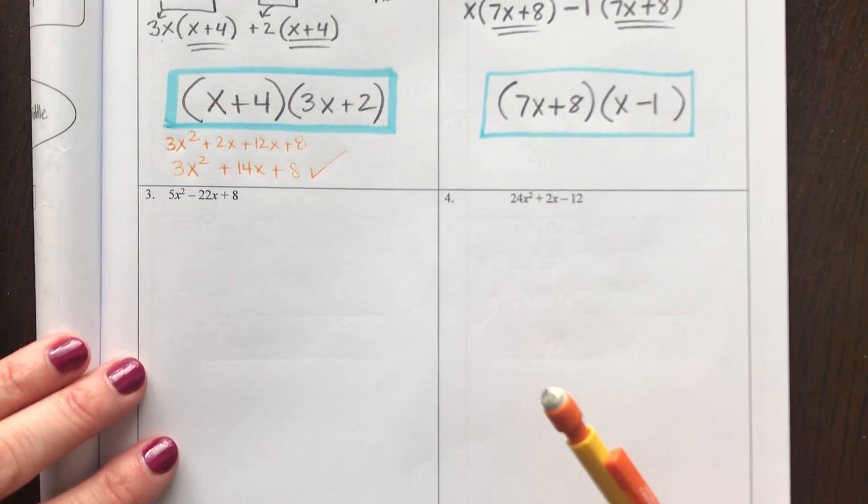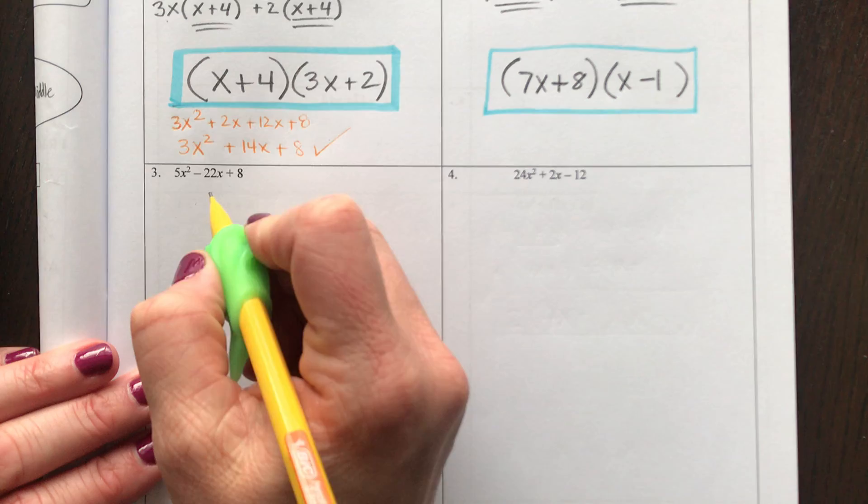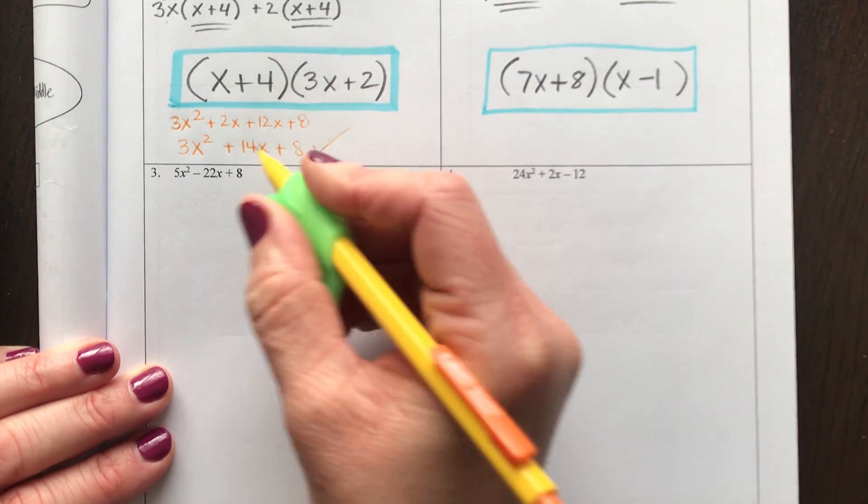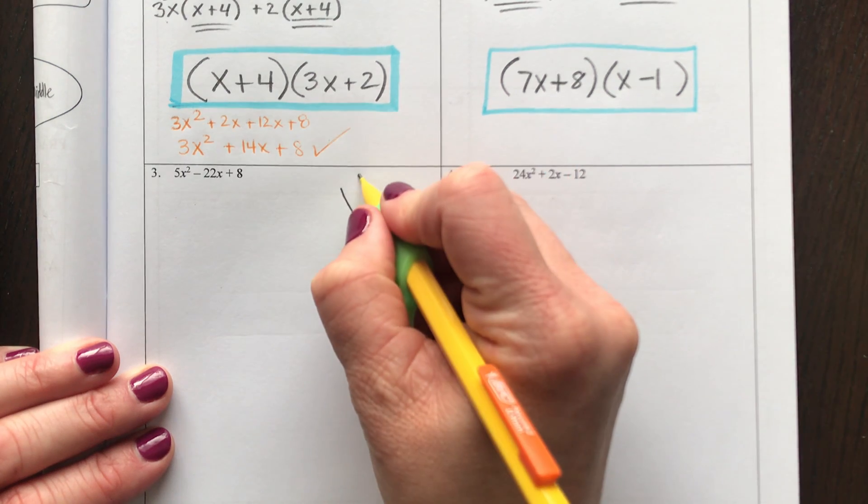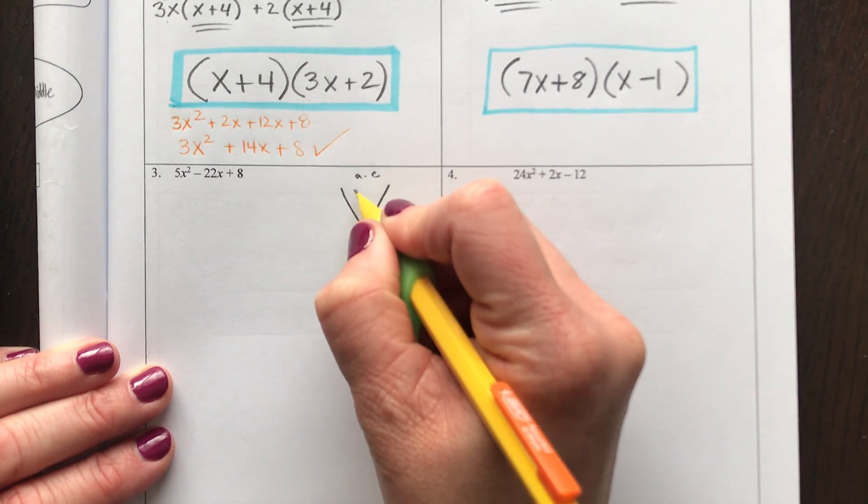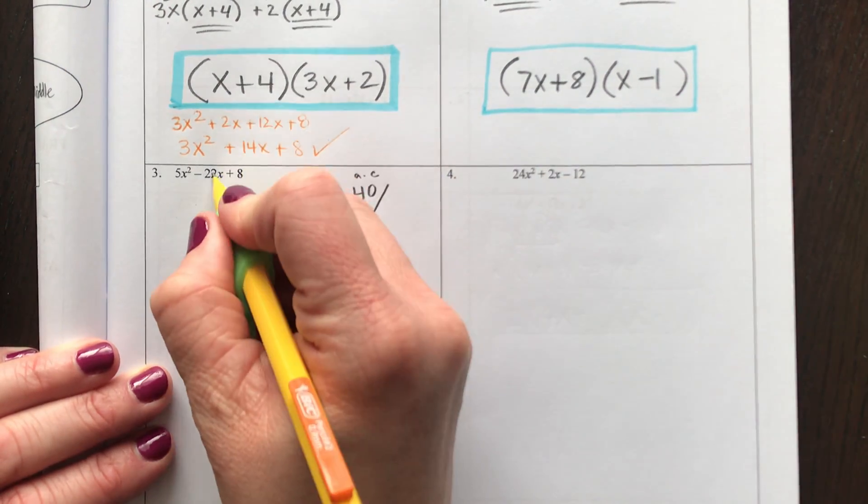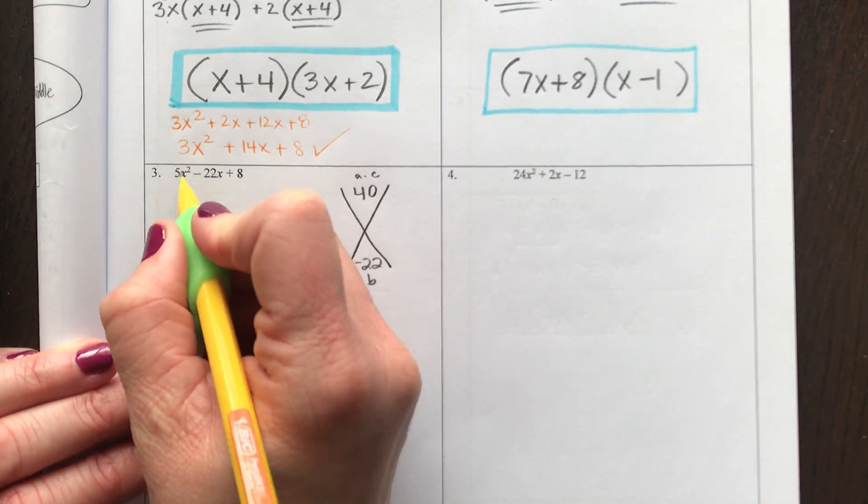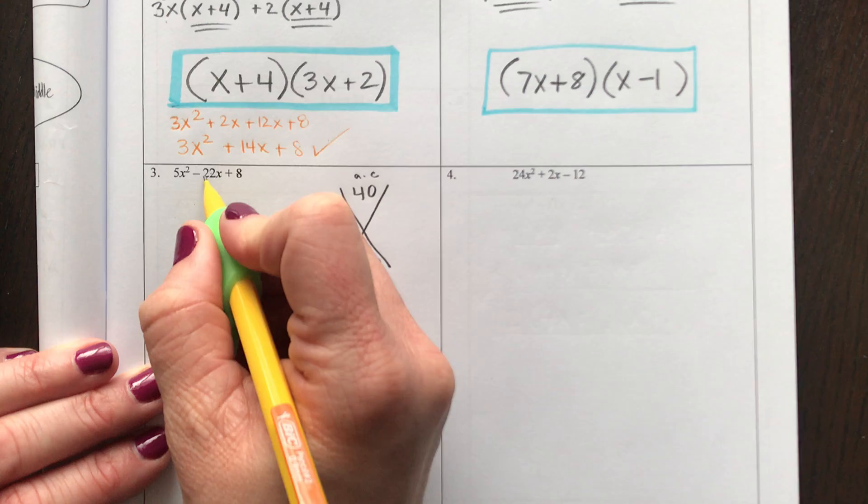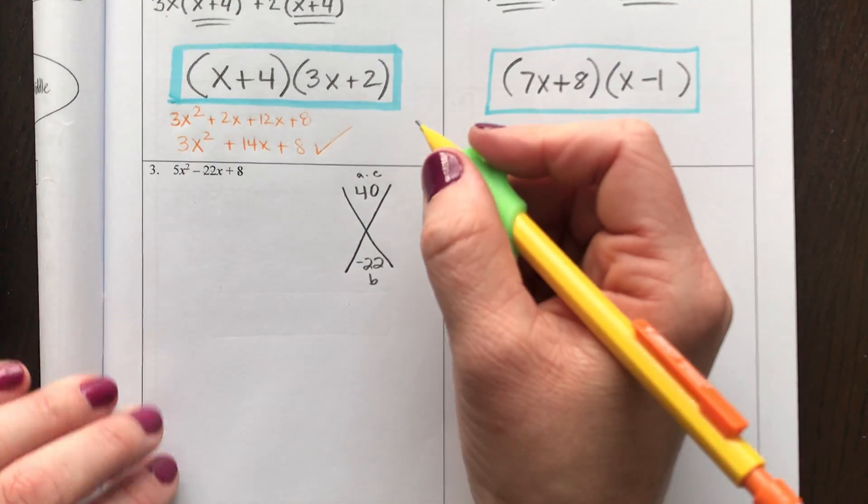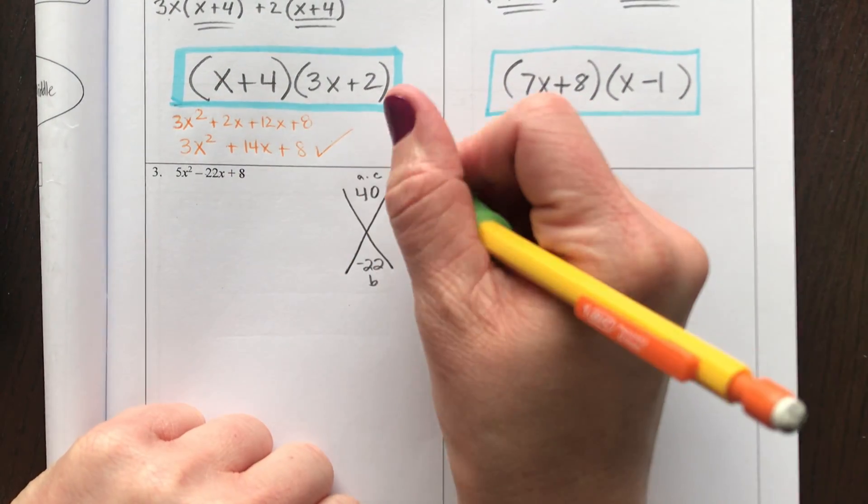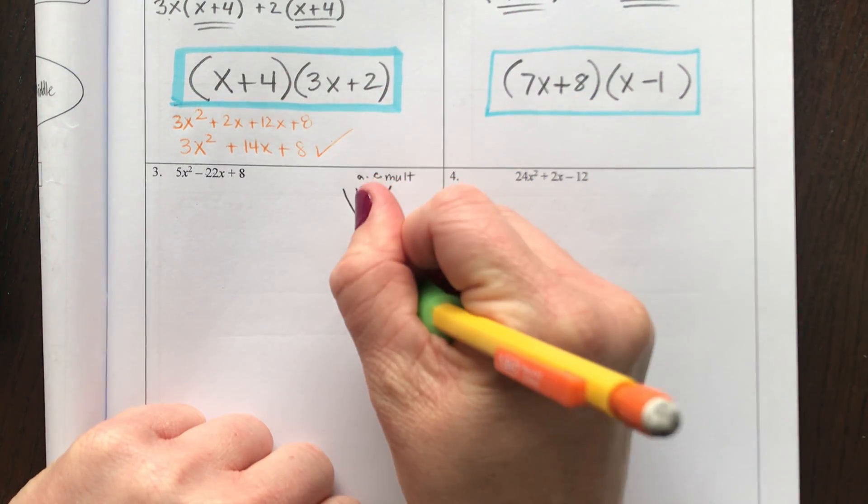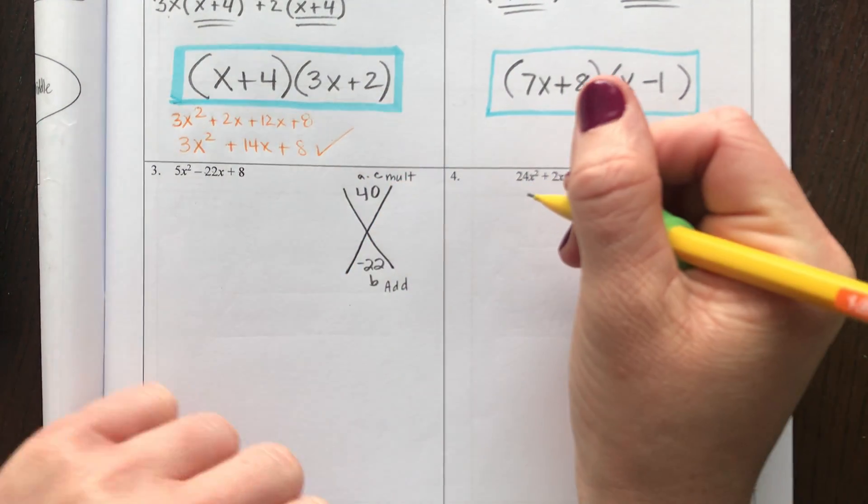Here's two more. In this video, I'm going to show you how to do split the middle. Here we go. 5 times 8, or A times C goes at the top, which is 40. -22, the signs matter. So positive times a positive makes positive 40. -22 goes at the bottom. What two numbers multiply to make 40 and add to make -22?